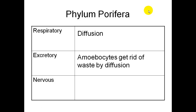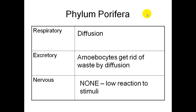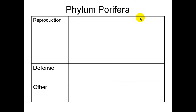The respiratory system is also done through diffusion. The excretory system — how they get rid of their waste — is handled through those cells called amoebocytes. They don't have a nervous system and have a low reaction to any stimuli.